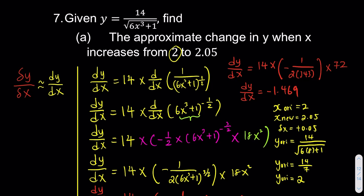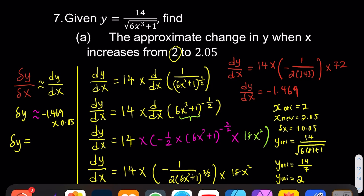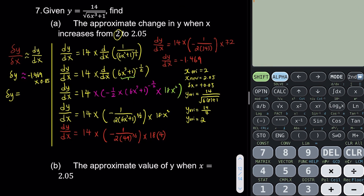Now we have all the information and we can finish it up. To find delta y, we take dy over dx times delta x. Our dy over dx is negative 1.469, and our delta x is 0.05. Using the calculator: negative 1.469 times 0.05 gives us negative 0.0735. And that will be our answer for part (a).